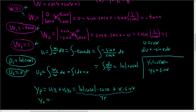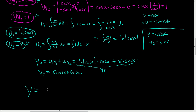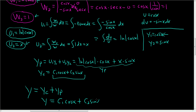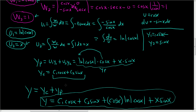Recall yc was c1·cos(x) plus c2·sin(x). The final answer is y equals yc plus yp, so y equals c1·cos(x) plus c2·sin(x) plus cos(x)·ln|cos(x)| plus x·sin(x). That took a long time, and this is probably one of the easiest variation of parameters problems we could have done. It's a long method — I hope this helps.